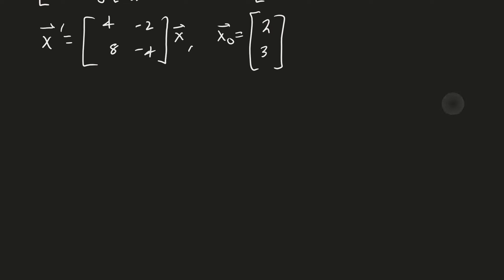Okay, so now I see my trace is 0. My determinant is minus 16 plus 16, 0. That means lambda squared equals 0. That means lambda equals 0, 0. Hmm, what's going on here?